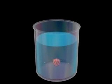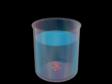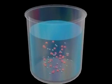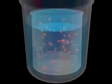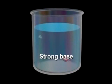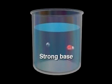When sodium hydroxide is dissolved in water, it completely dissociates into sodium and hydroxide ions. Because sodium hydroxide is completely ionized in solution, it is referred to as a strong base. It is also, of course, a strong electrolyte.